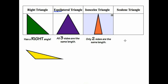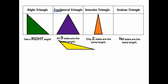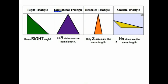Lastly is our scalene triangle. The scalene triangle has no sides the same length, and that would be our yellow triangle — each side has a different length. And these are our four types of triangles.